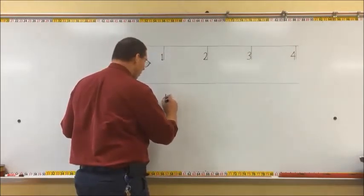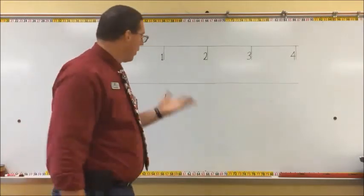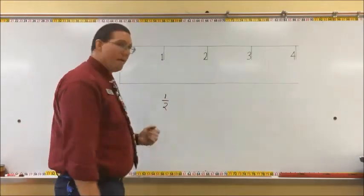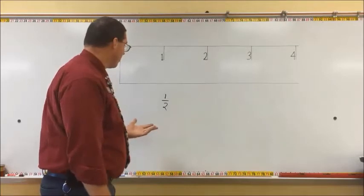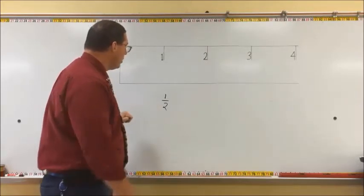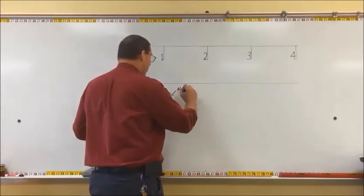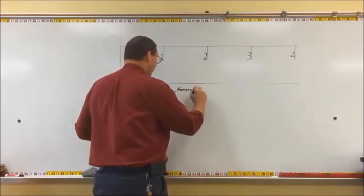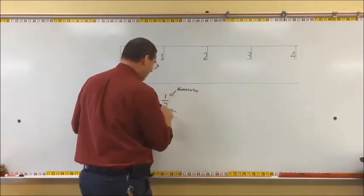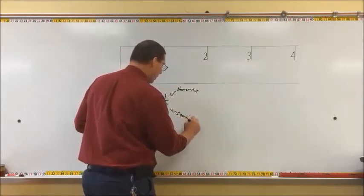Let's say we start off with one half - the fraction one half. Most people are okay with the fraction one half - that's half the distance, or half the amount. The top number is called the numerator, and the bottom number in the fraction is called the denominator.